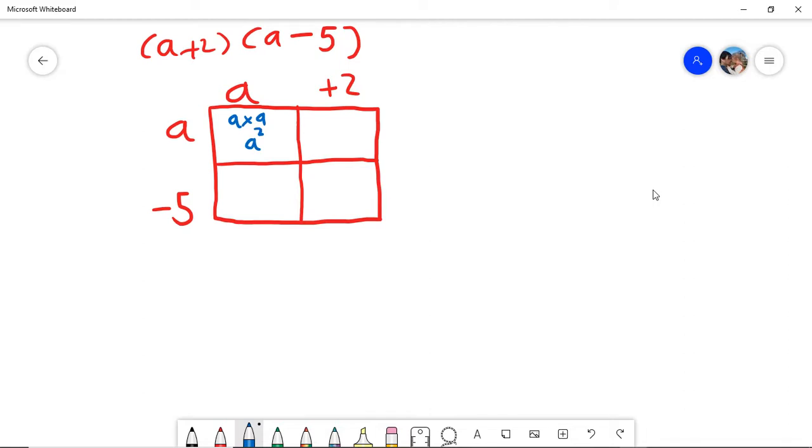Notice, by the way, that this actually is a square. This is an a by a square. So the rest of these are rectangles. This in the corner is actually a square, an a squared. This one here would be a times 2, which would be 2a. And this is where we just need to be careful. If we're thinking of this as a negative 5, then what we're doing is negative 5 times a, which is negative 5a.